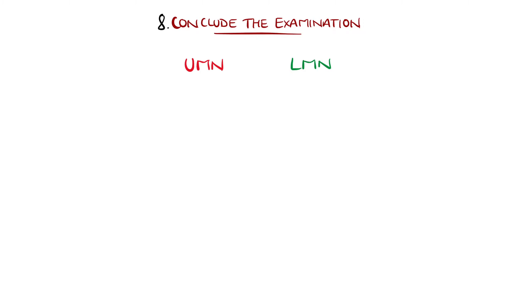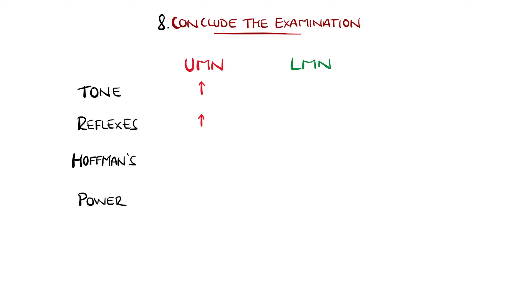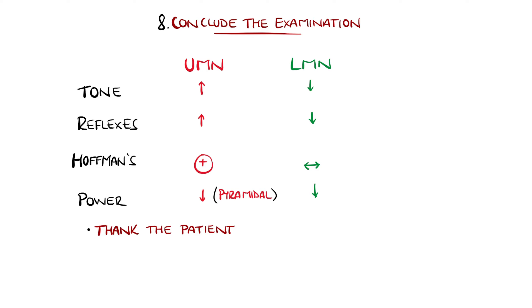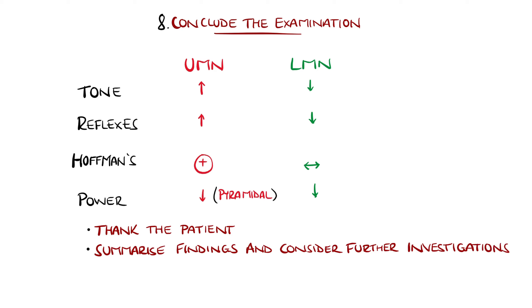Remember that a neurological exam not only detects neurological deficits but helps identify where the deficit is arising from. In general, upper motor neuron lesions are indicated by increased tone, hyperreflexia, positive Hoffman's sign, and reduced power in a pyramidal pattern — weaker extensors than flexors in the arms, and the opposite in the legs. Lower motor neuron lesions tend to feature reduced tone, reduced reflexes, normal Hoffman's sign, and reduced power. Complete the exam by thanking the patient, asking them to dress, summarising your findings, and considering any further assessments or imaging that may be required.